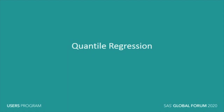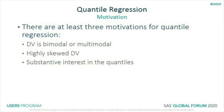So first: quantile regression. In addition to reducing — really eliminating — the assumptions about the residuals, there are three other motivations for quantile regression.